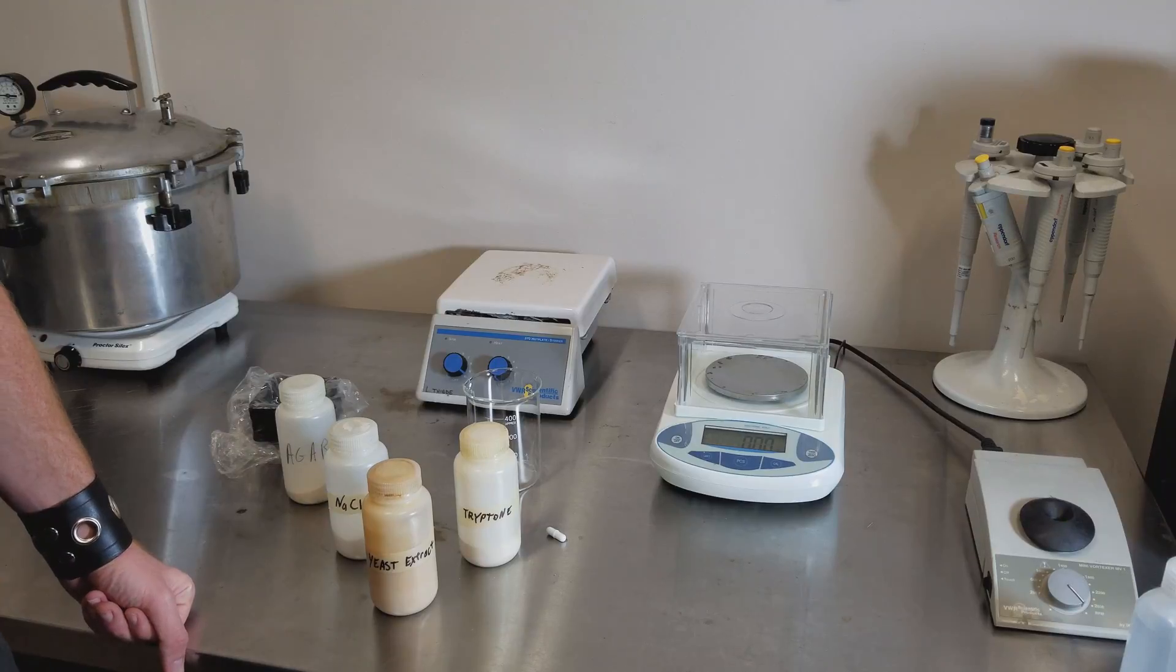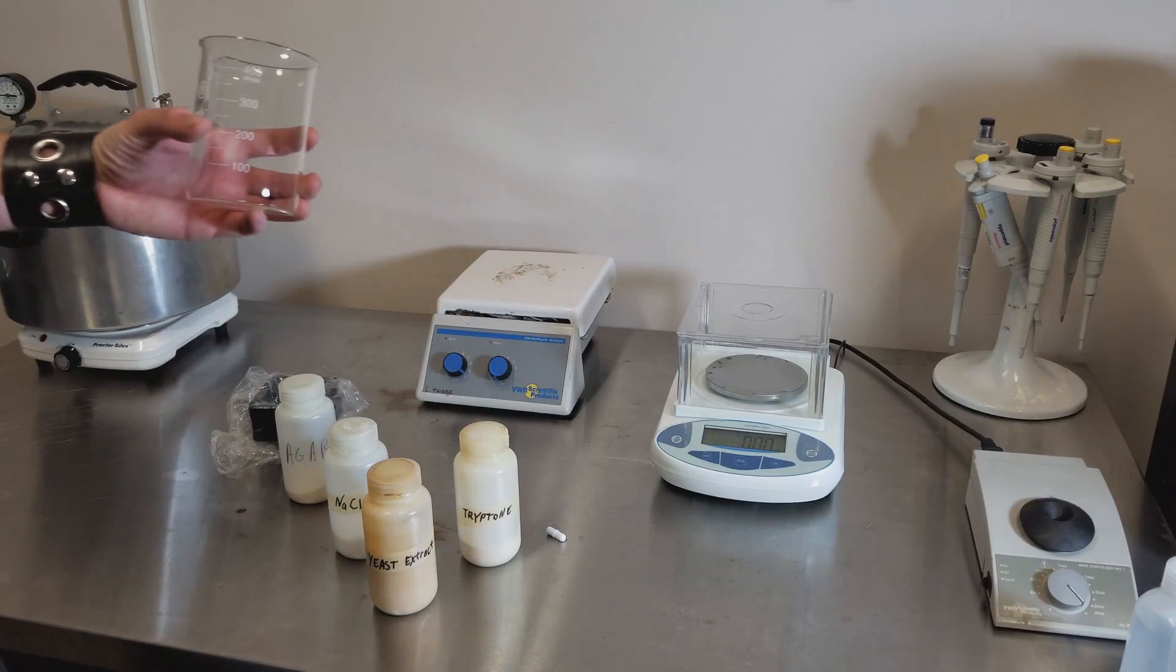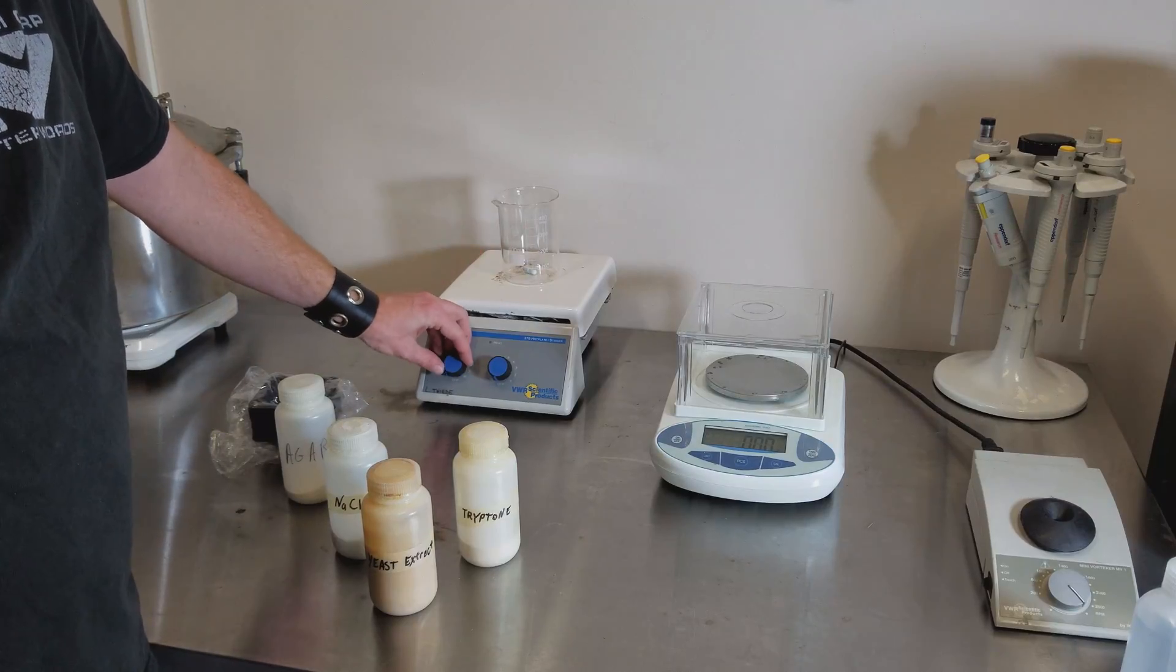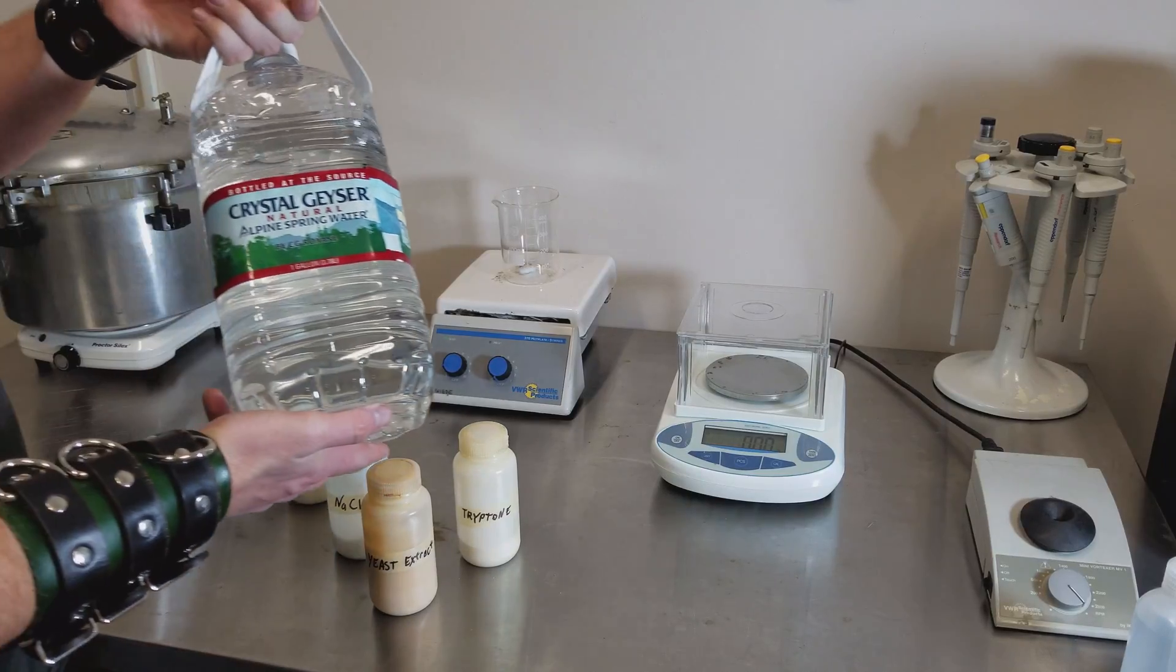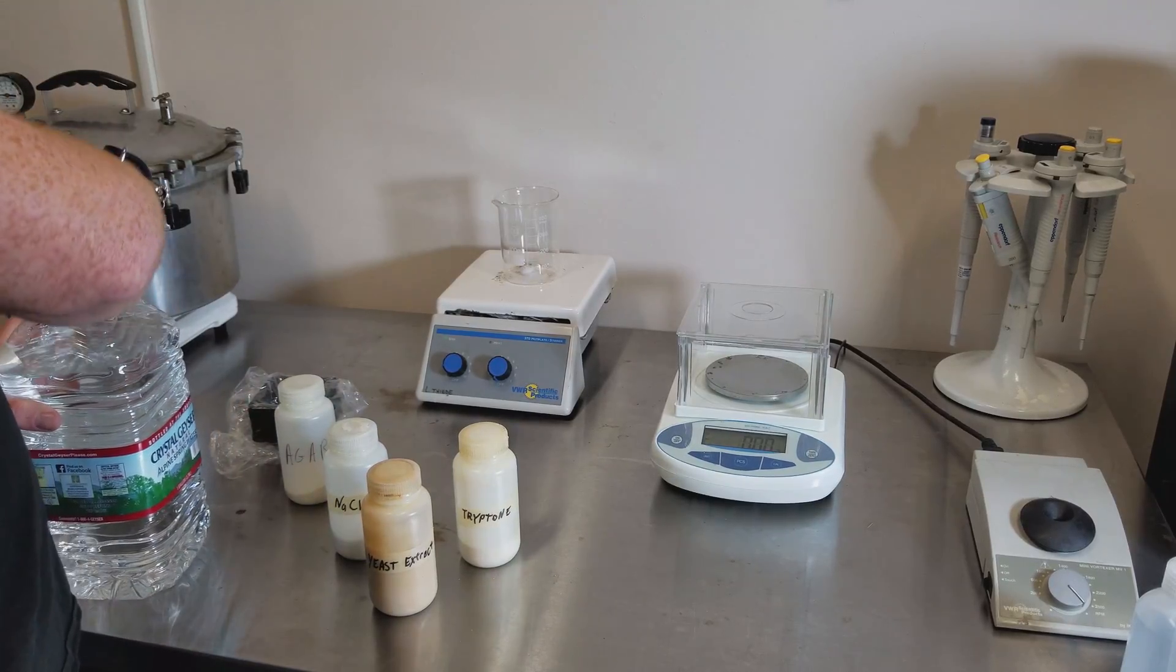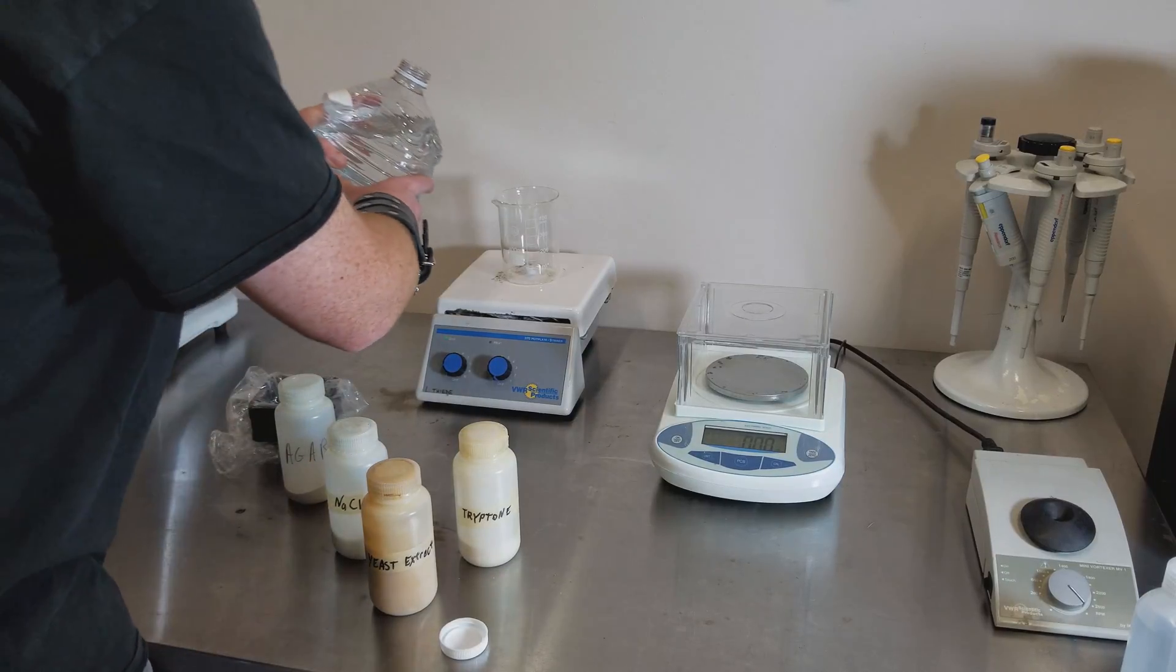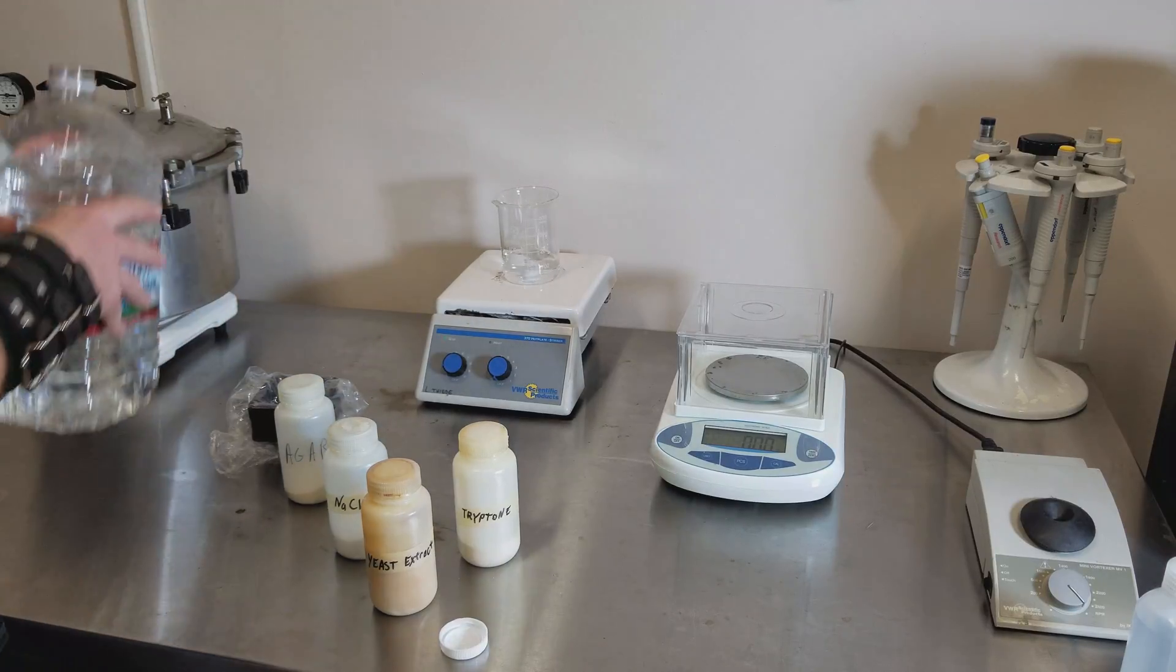Today we're going to be making about 250 milliliters of growth medium. So we start by taking a beaker and adding a magnetic stir bar to that beaker. If you have a magnetic stirrer this helps out a lot. Next you'll want to add some DI water. You don't want to put in 250 milliliters but you want to put in enough to mix what we're going to be working with. We'll top it off at the end. We'll come back to why that's important later.